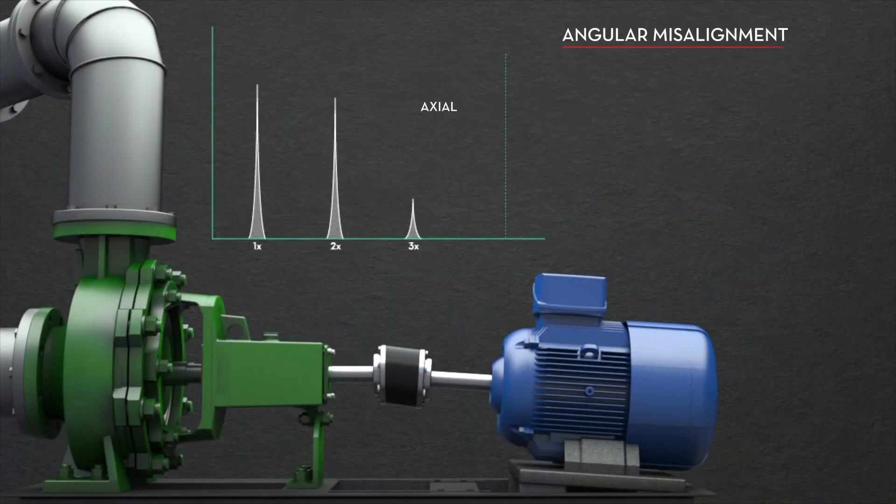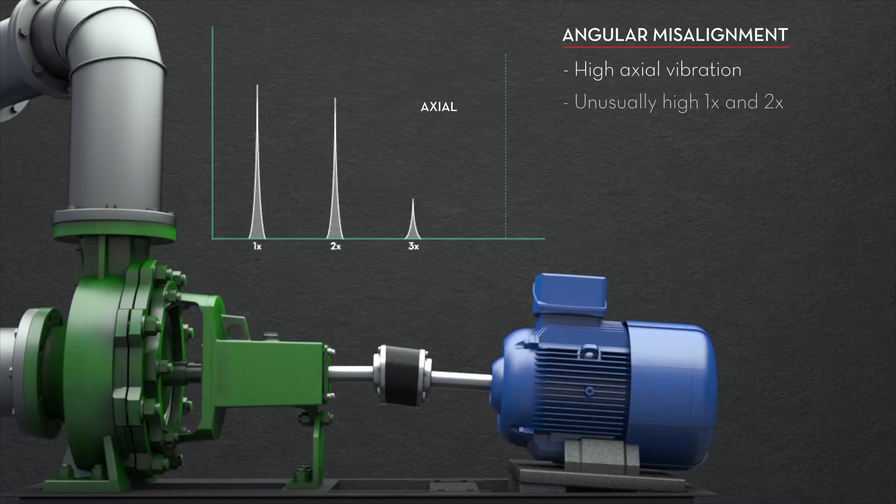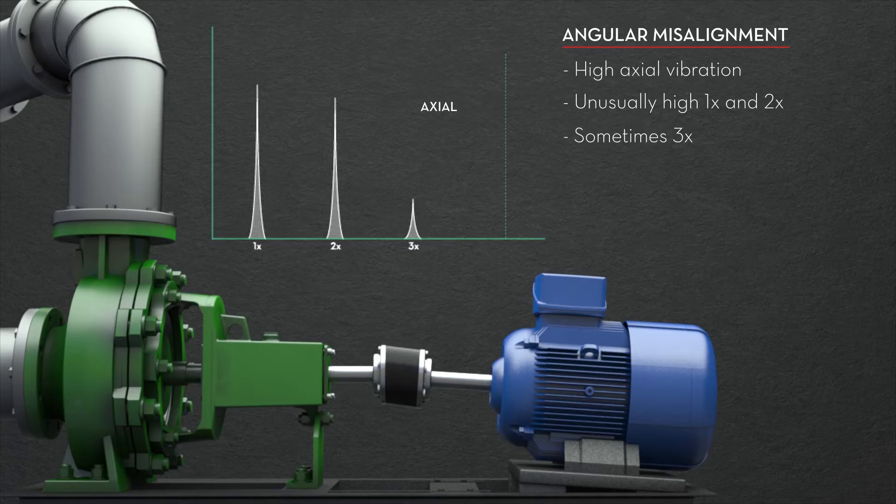Angular misalignment is categorized by high axial vibration with unusually high 1x and 2x and sometimes 3x in the axial direction.